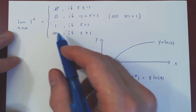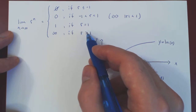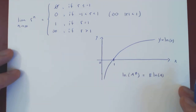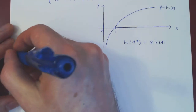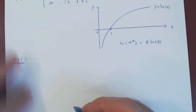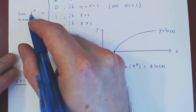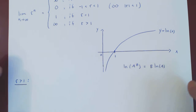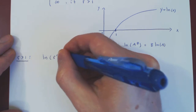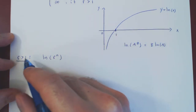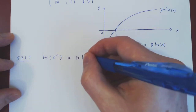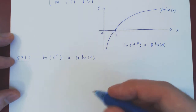Let's first show that for any value of r that is slightly bigger than 1, r to the n will blow up to positive infinity. Instead of considering r^n directly, we'll consider ln(r^n). Since r is positive and n is positive, we can bring n out front as a scalar multiple, giving us n times ln(r).